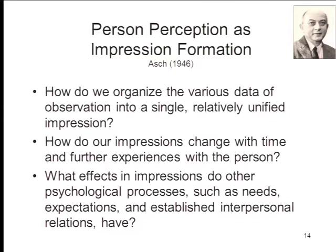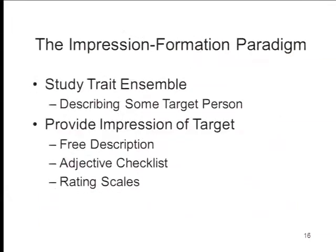Then, how do these percepts affect other kinds of psychological processes? To study this, Asch invented a paradigm — the impression formation paradigm — in which subjects were brought into the laboratory and asked to read a passage or study a list of words, what Asch called the trait ensemble, that describes some target person — not a person they know, a stranger. They then provided their impressions either in a free description, an adjective checklist, or rating scales. You get some information and then you form an impression of the person on other terms.